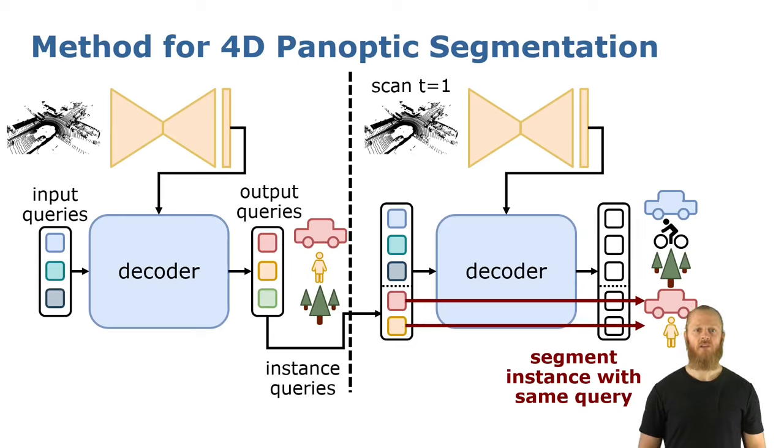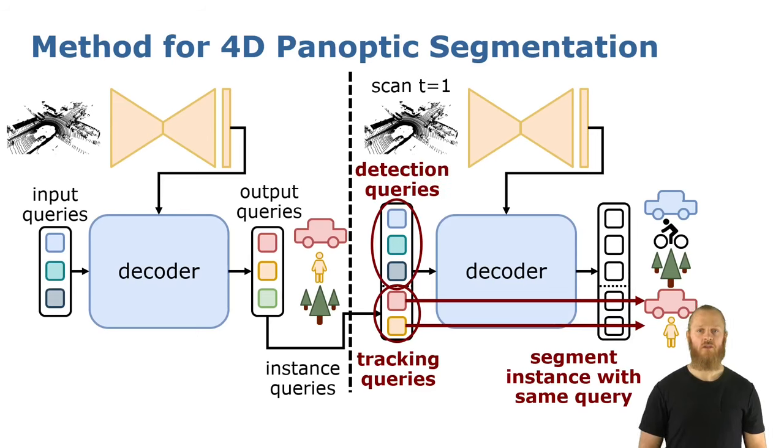For example, this red query is always segmenting the red car. We call these queries tracking queries because they are indeed tracking some instances. And the rest of the queries, we call them detection queries and they will segment the new appearing instances and the stuff classes.